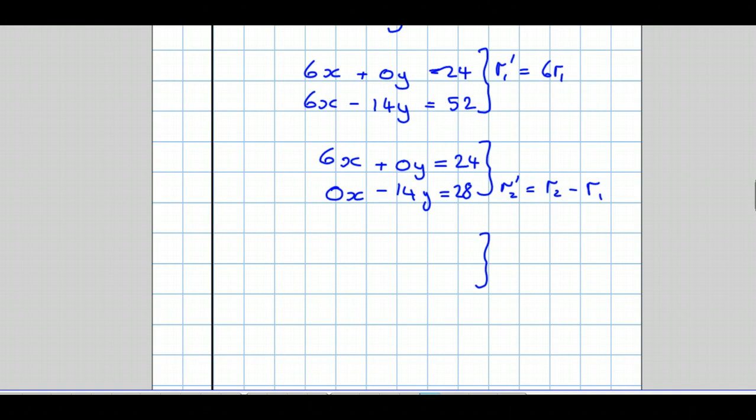And we're almost there. All I'm going to do now is my new row 2 is going to be my old row 2 divided by minus 14. So what we get: 6x + 0y = 24, and then minus 14 divided by minus 14 is 1, so y equals 28 divided by minus 14, which is minus 2.